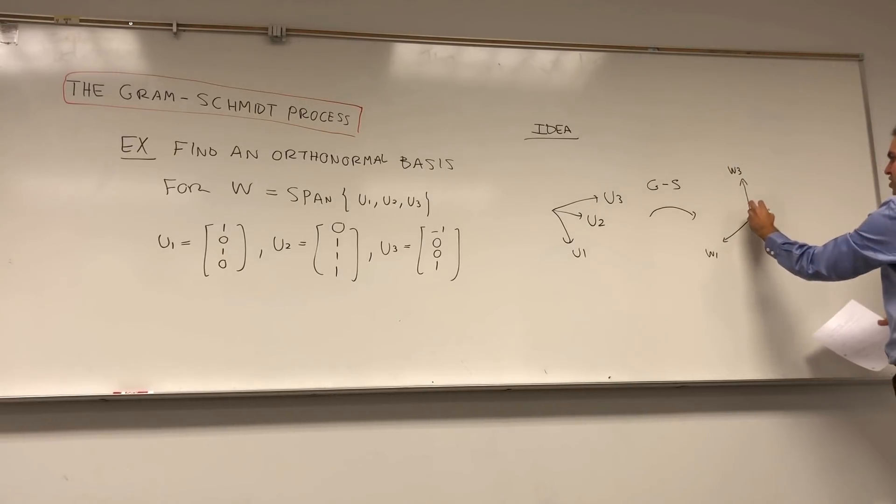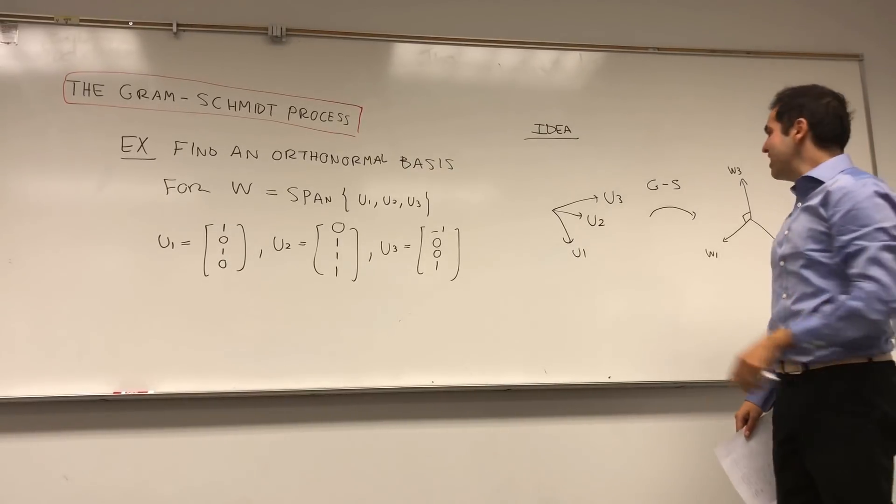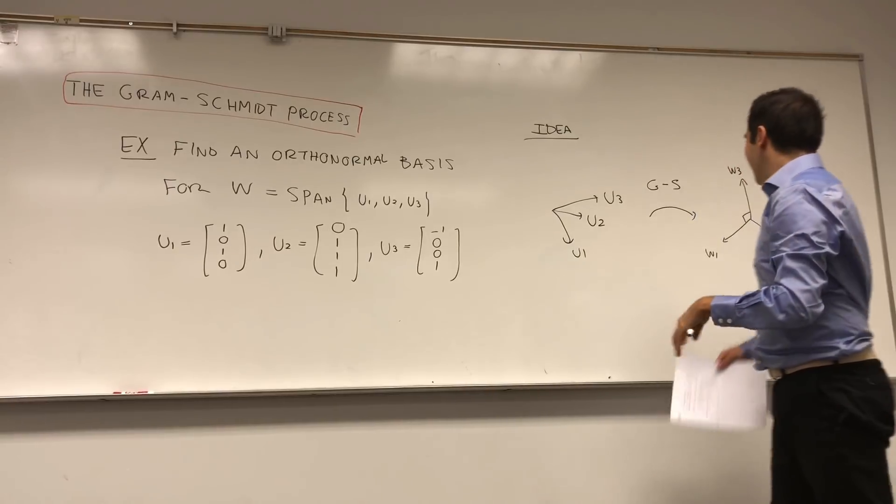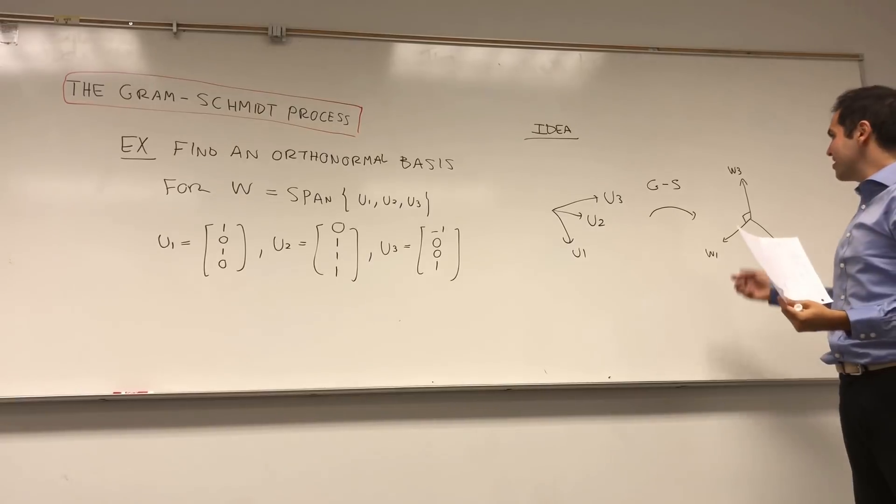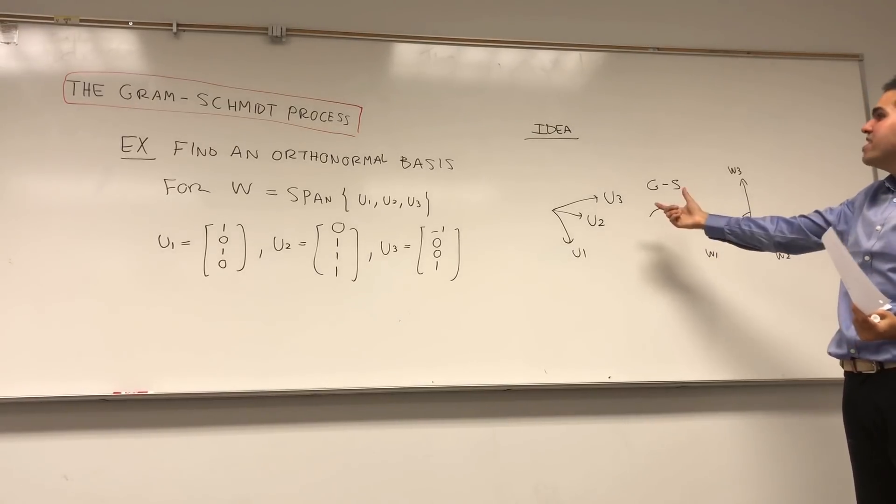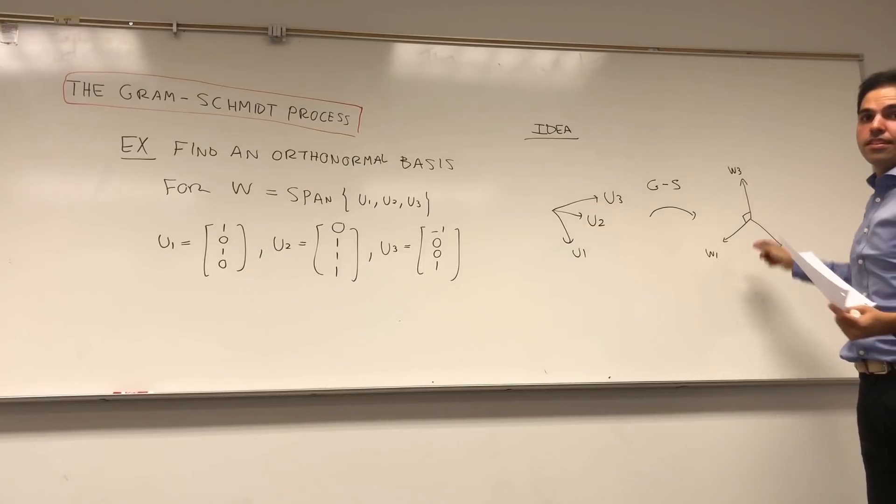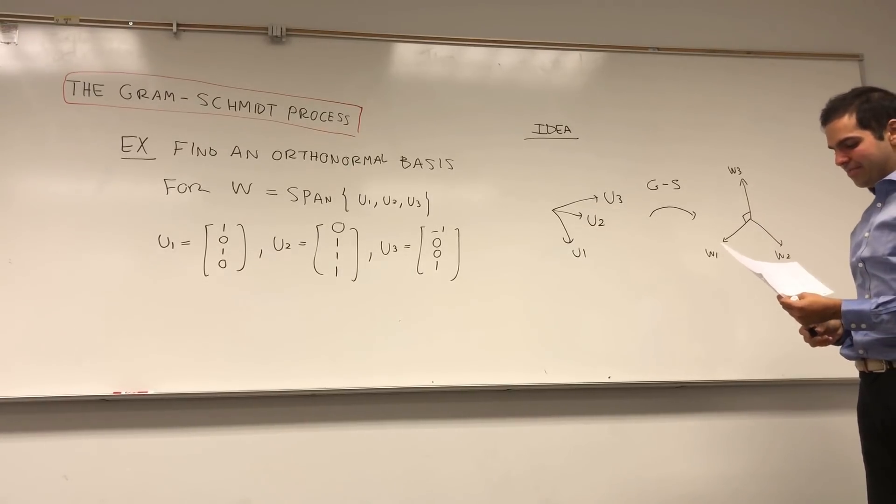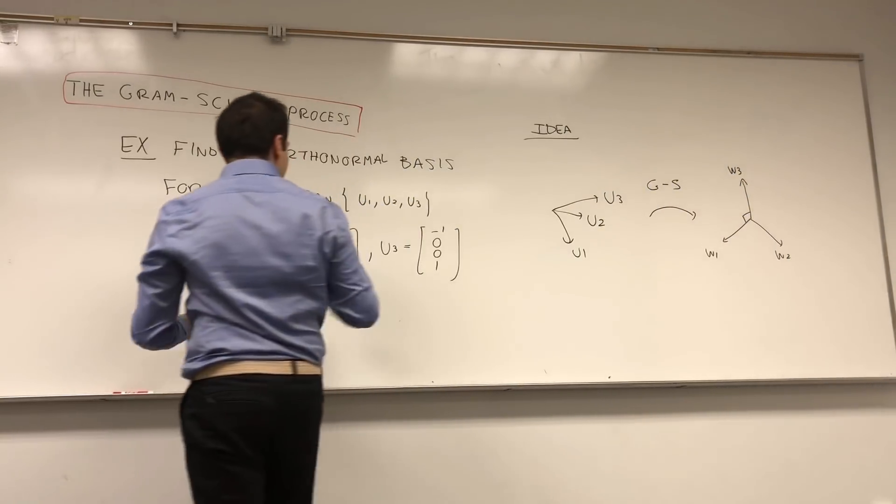In other words, what we want to do is perpendicularize this set. With this Gram-Schmidt process, we'll be able to turn those three ugly vectors into something that's very nice: W1, W2, W3, with the property that each of those vectors are perpendicular, and not only that, each of the vectors will have length 1.